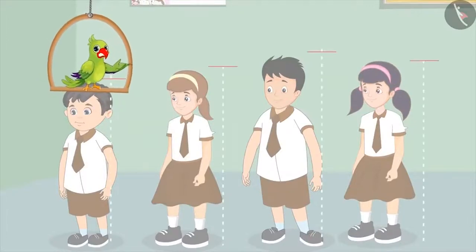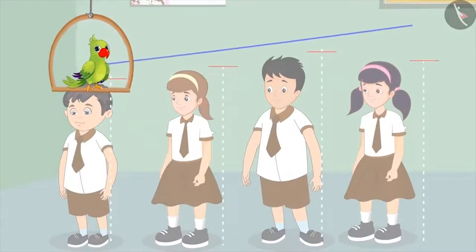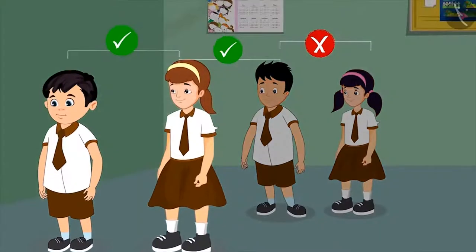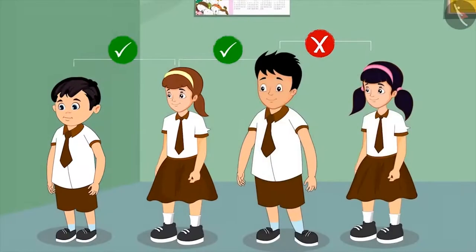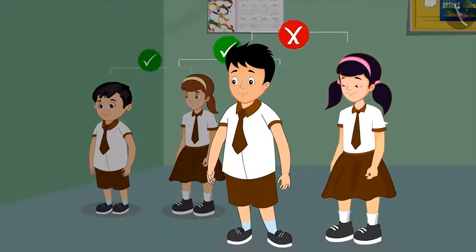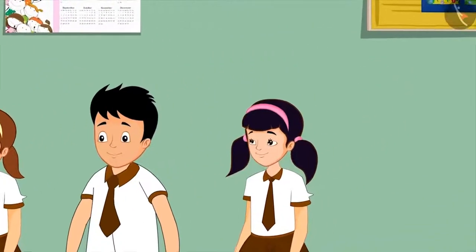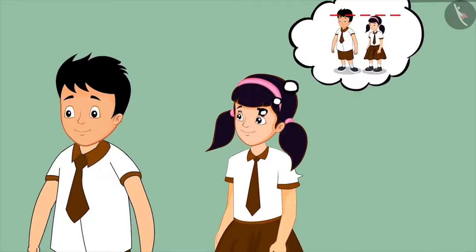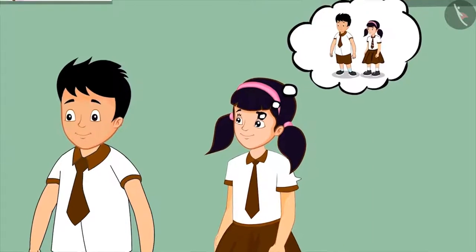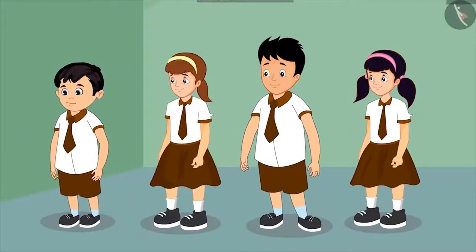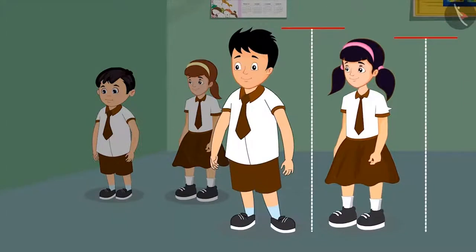So children, are Chotu and his friends standing in the correct order of height? Chotu and Neha are standing in the right order, but Sonu and Aarti are not. Aarti realizes this as she is not able to see anything standing behind Sonu. Therefore, Aarti should have stood in front of Sonu, as she is shorter than him in height.